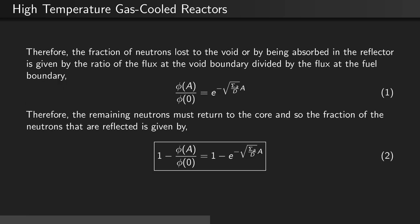Therefore, the remaining neutrons must return to the core because they're not absorbed and they don't leak out into the void. And so the fraction of neutrons that are reflected is given by 1 minus phi of a divided by phi of 0 or equal to 1 minus e to the minus square root sigma a over d times a.